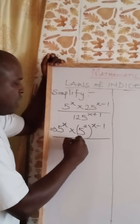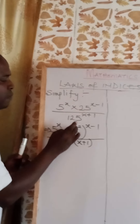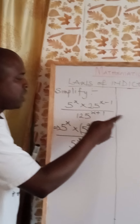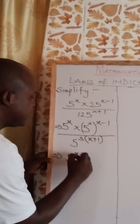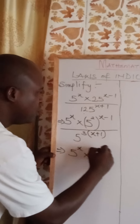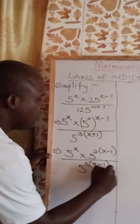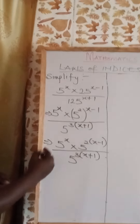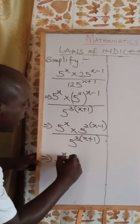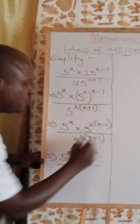The question will now become: 5 raised to the power of x, times 5 squared raised to the power of x minus 1, all over 5 to the power of 3, raised to the power of x plus 1. According to the law of indices, when you have both base and power raised to an external power, you multiply the power by the external power. That means you get 5 to the power of x, times 5 to the power of 2(x minus 1), over 5 to the power of 3(x plus 1).